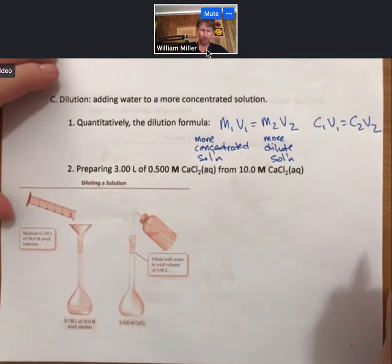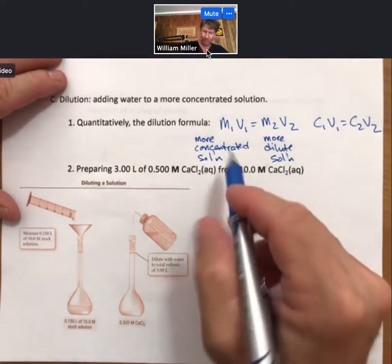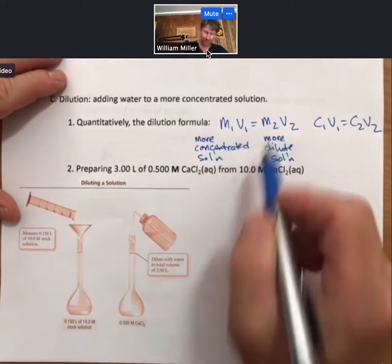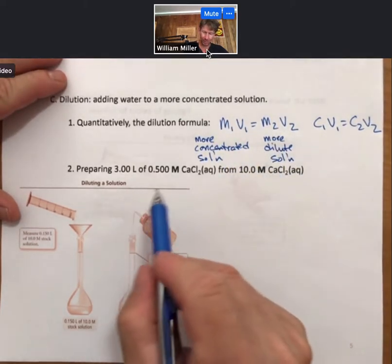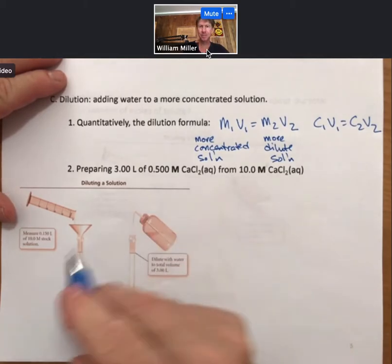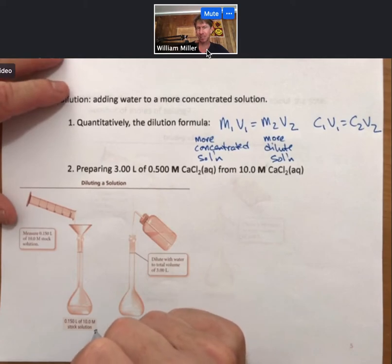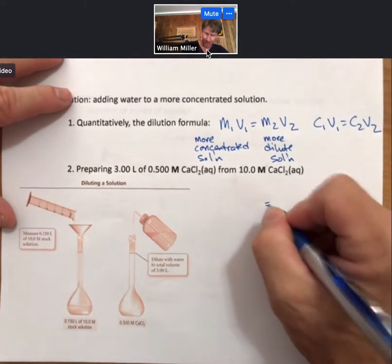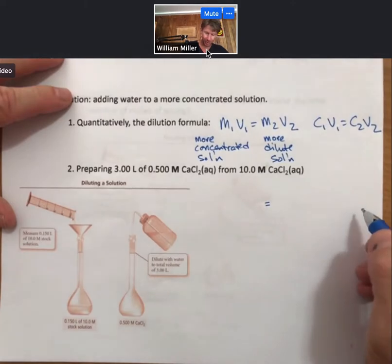Now for number two, preparing 3.00 liters of a 0.500 molar calcium chloride solution from 10.0 molarity calcium chloride solution. We're going to take the M1V1 equals M2V2 formula. We see that of the two molarities, 0.5 molar is more dilute, less concentrated. That's going to be my M2. I'm going to fill my M2 and V2 over here.